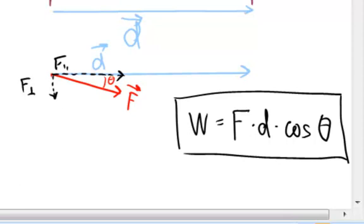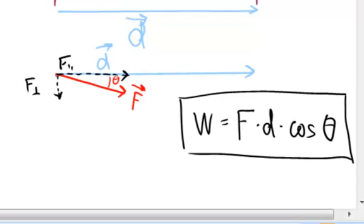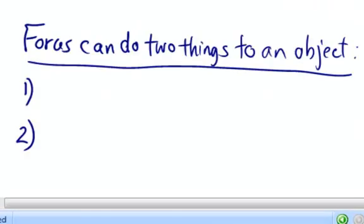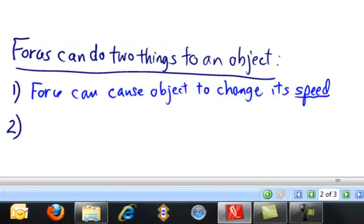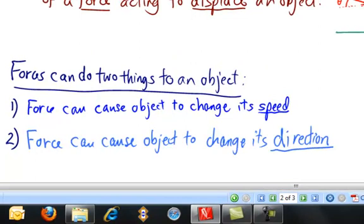Now let me pause here to say that forces can have two types of influences on an object's motion. The forces can do two things to an object. Here's what they are. Number one, a force can cause an object to change its speed. And number two, a force can cause an object to change its direction. Now it may be that the force will do both of these things, depending on how the direction of the force is oriented with respect to the object's velocity.